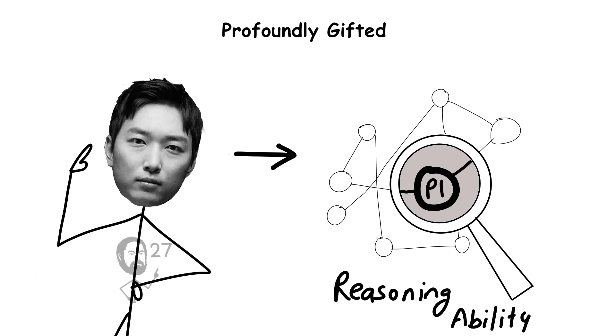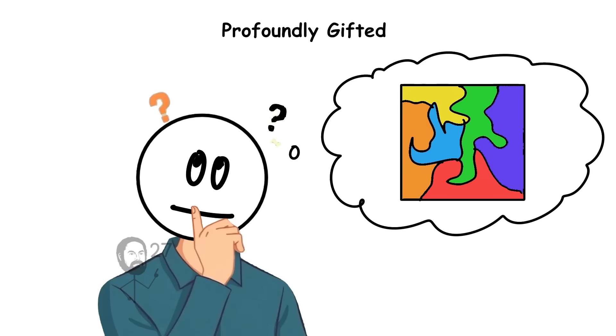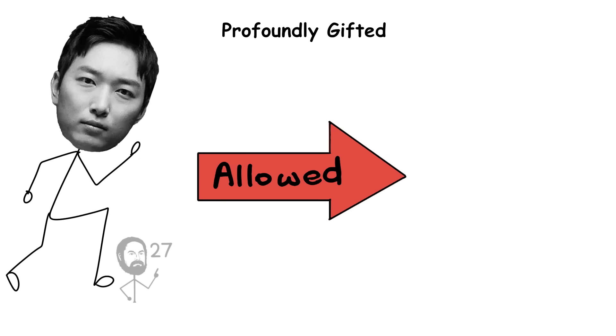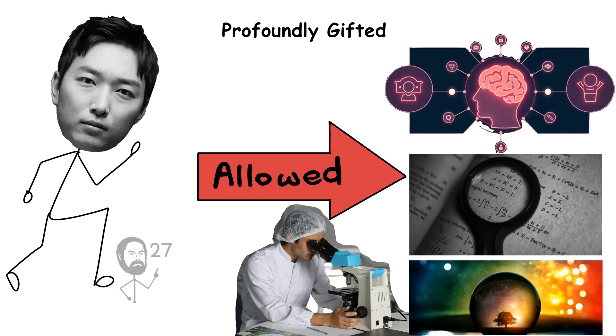Their reasoning is often described as metacognitive, meaning they not only think deeply, but also understand and manipulate the structure of their own thinking. This allows them to create entirely new frameworks of knowledge, mathematical systems, scientific theories, artistic movements, or philosophical paradigms that can alter entire fields of study.